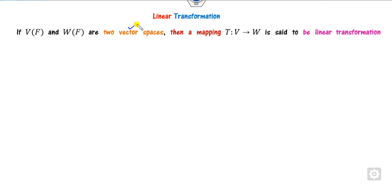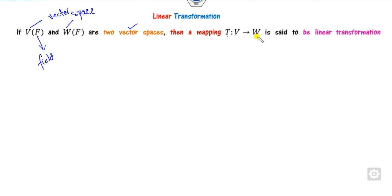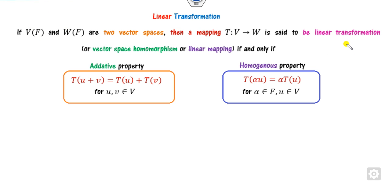If you have any two vector spaces V and W over the field F, then the mapping T from one vector space to another is called a linear transformation, also called a vector space homomorphism or linear mapping, whenever two properties are satisfied: the first is the additive property, and the second is the homogeneous property.